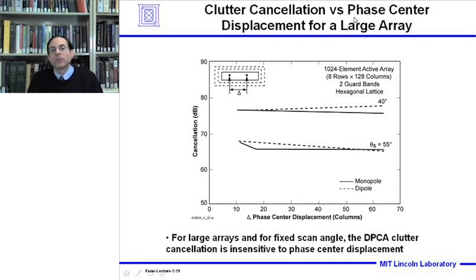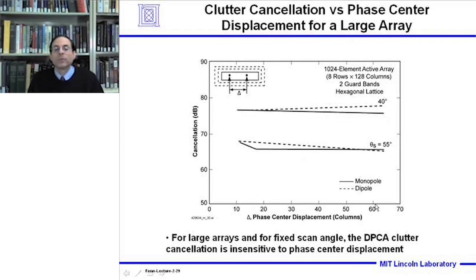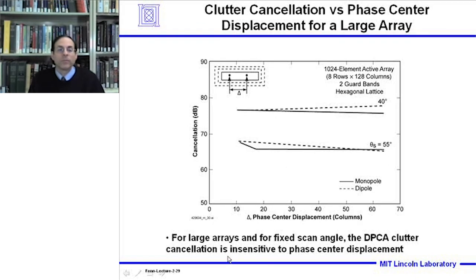Now we look at clutter cancellation versus phase center displacement for a fixed-size large array: an 8-row by 128-column (1024-element) active array with two guard bands and hexagonal lattice. For a particular scan angle, the clutter cancellation is relatively insensitive to the phase center displacement in columns for this large array. The cancellation does degrade as the scan angle increases, but these values are very large — in excess of about 65 dB — noting that no TR module errors are simulated, which would degrade performance. For large arrays at a fixed scan angle, DPCA clutter cancellation is insensitive to phase center displacement.